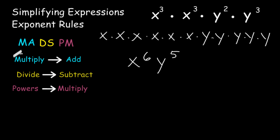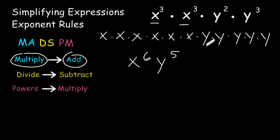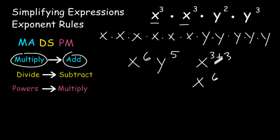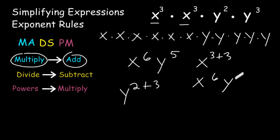Whenever you are multiplying like bases, all you really have to do is add the exponents of those like bases. So what we could have done was just written x one time and then taken the two exponents — the three and the three — and added those together, giving us x to the sixth power. The same thing for y: write it one time and add the two exponents, so y to the second power times y to the third power equals y to the fifth power. When multiplying like bases, just add the exponents.